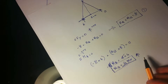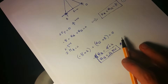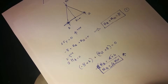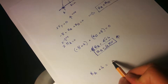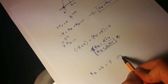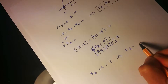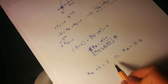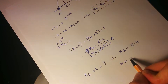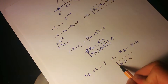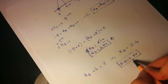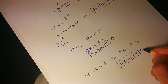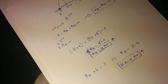Substituting into the first equation: Ra plus 4 equals 8, so Ra equals 4 kilonewtons as well. Since the truss is symmetrical, it's obvious that both reaction forces are equal. Ra also acts upwards.